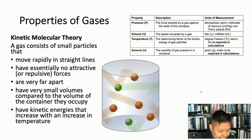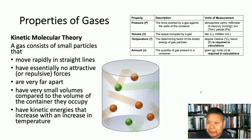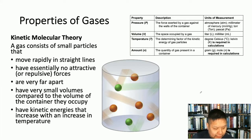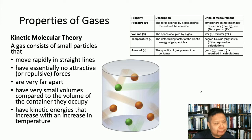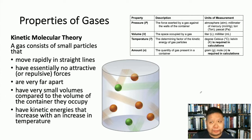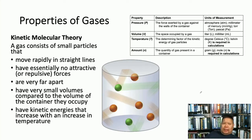Since we're talking about gases, let's talk about some properties of gases. The properties of gases are dictated by what we call the kinetic molecular theory. Gas molecules move rapidly in straight lines, they have very little attractive forces and mostly repel each other, and they are very far apart. Gas molecules occupy very small volumes compared to the containers they occupy.